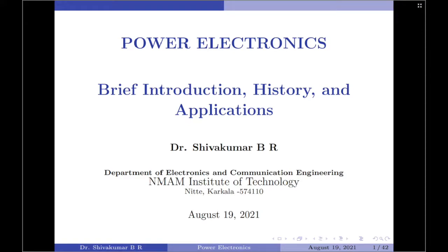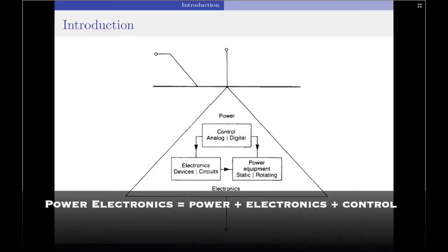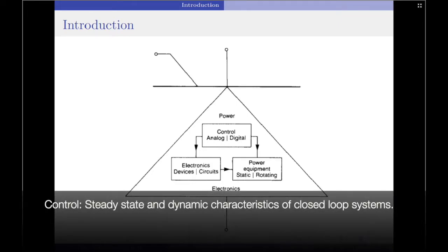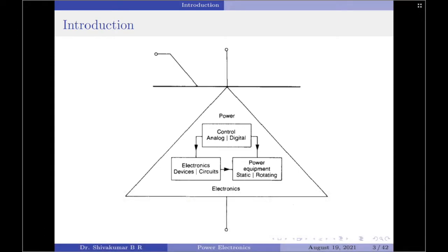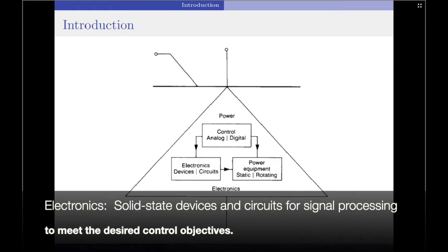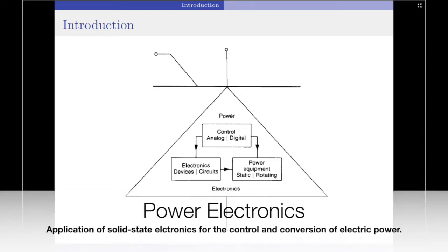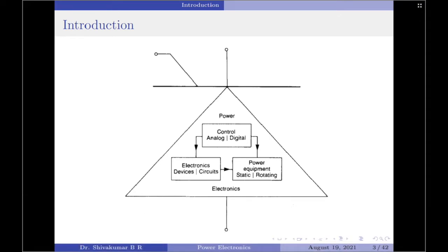In this session we are going to have a small discussion on an introduction to power electronics. Power electronics combines power, electronics, and control. Control deals with the steady state and dynamic characteristics of closed loop systems. Power deals with the static and rotating power equipment for the generation, transmission, and distribution of electric power. Electronics deals with the solid state devices and circuits for signal processing to meet the desired control objectives. Therefore, power electronics may be defined as an application of solid state electronics for the control and conversion of electric power.